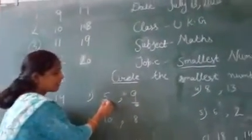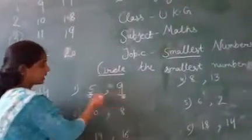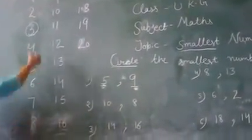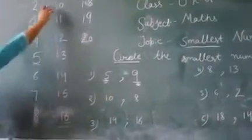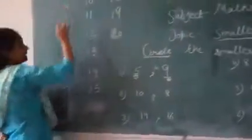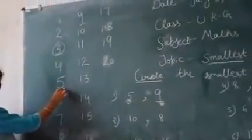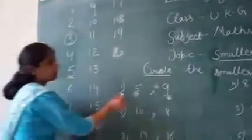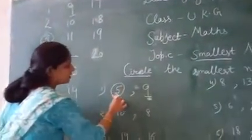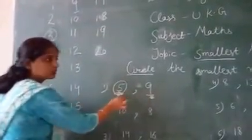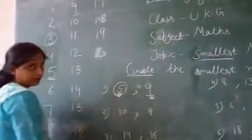Now we have to decide that five is smaller or nine is smaller. We have to count from one to nine: 1, 2, 3, 4, 5, 6, 7, 8, 9. So nine comes after five. Our answer is five is the smallest — five is the smallest number.